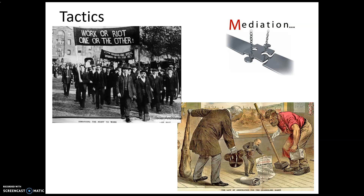A strike becomes a game of chicken. Management can't make or sell products without workers, so they lose money. But workers without wages need to eat and pay bills. That's where union dues come in — the accumulated funds are paid out little by little to help workers last through the strike, while factory owners, who tend to have more money, wait them out.